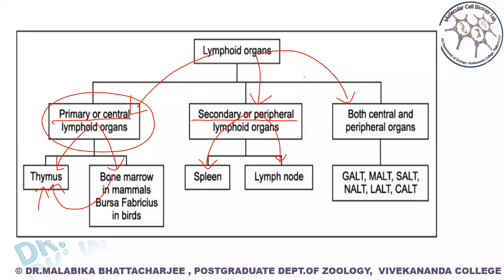The third category is an extension of the secondary lymphoid organs. This includes basically the mucosal-associated lymphoid tissue. These tissues are often compartmentalized into T cell areas and B cell areas.